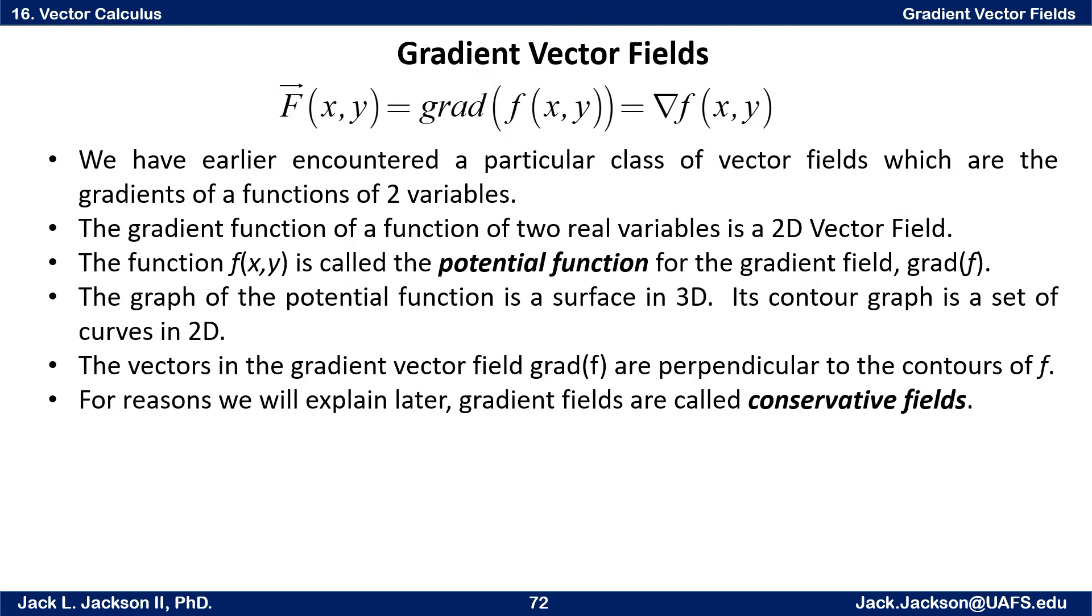A gradient is a function itself which takes input as a function of two variables and outputs a gradient function. That gradient function is a vector field. So ultimately you have some x and y coordinates and you end up with a vector which is the gradient of the original function at a particular point. The gradient of a function of two real variables is actually a 2D vector field.